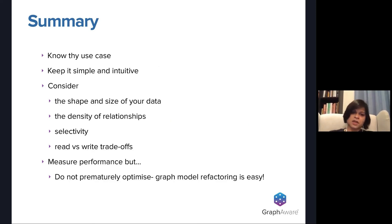So to summarize, you should always know your use case before you start to model your graph. Keep it simple and intuitive. That's the beauty of graph databases. Keep in mind the shape of your graph, the size of your data, the density of relationships, index selectivity, read versus write trade offs. All these go hand in hand with your model to ensure that you have the best performance possible. And of course, you should always measure performance. But as with everything, do not prematurely optimize because as you could see, even in 10 minutes, that graph model refactoring is really easy.